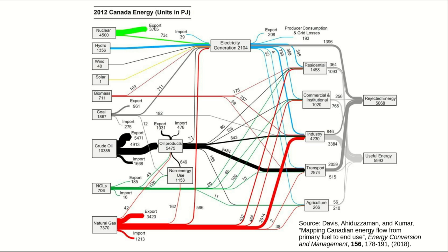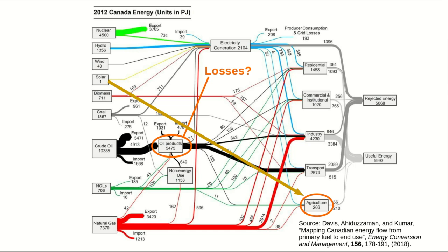Before moving on, I want to point out a few things that are not on this diagram — and this is not a criticism. The diagram is plenty complicated already, and the makers had to decide what was going in and what wasn't. First, there are no losses shown in the production of oil products; these are chemical processes, so there have to be losses there. Also, look at the agriculture box: it shows inputs of oil, natural gas, and electricity, but deliberately excludes the enormous input of solar energy as sunlight falling on fields and pastures, and the large flow of energy in the form of food to people — though it is normal to leave those out.